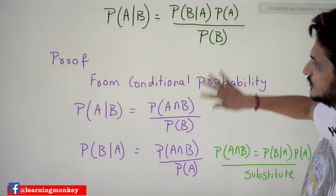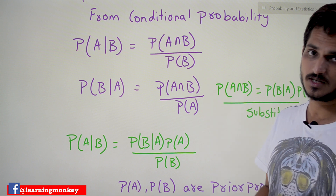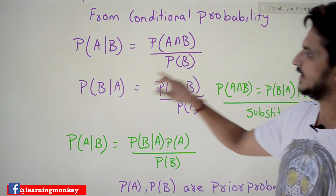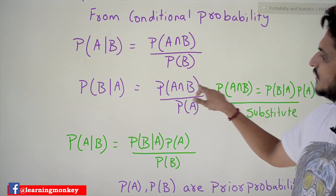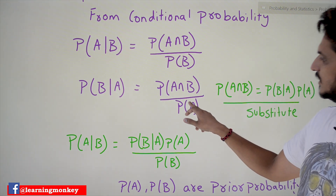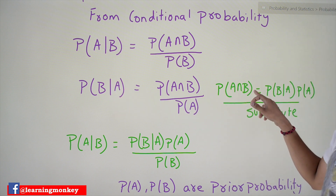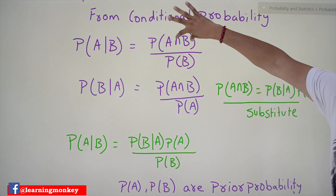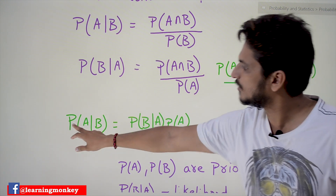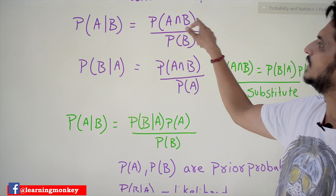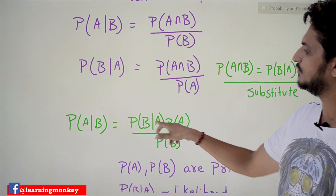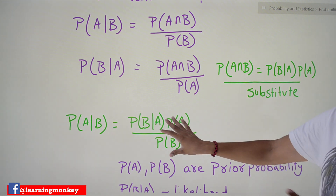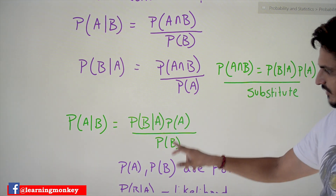How did we get this equation? Let's try to understand using our previous knowledge of conditional probability. Probability of A given B is given as probability of A intersection B divided by probability of B. Probability of B given A is given as probability of A intersection B divided by probability of A. If you move probability of A to the other side, probability of A intersection B equals probability of B given A multiplied by probability of A. Substituting here, probability of A given B equals probability of B given A multiplied by probability of A, divided by probability of B.